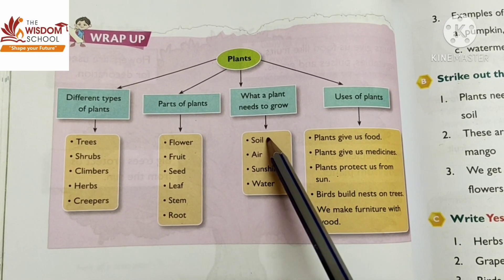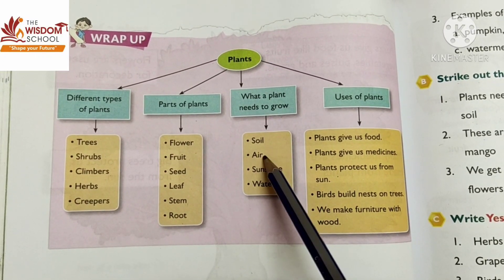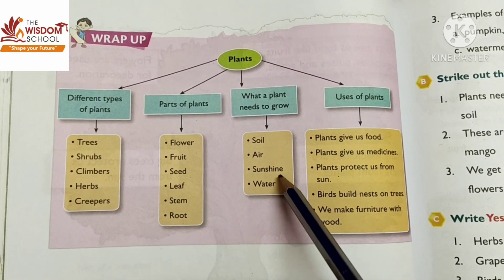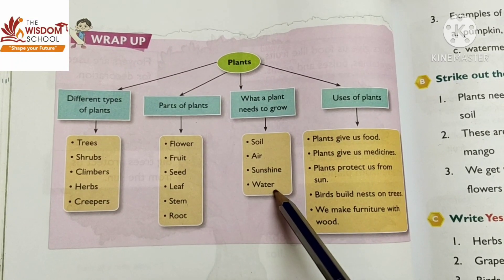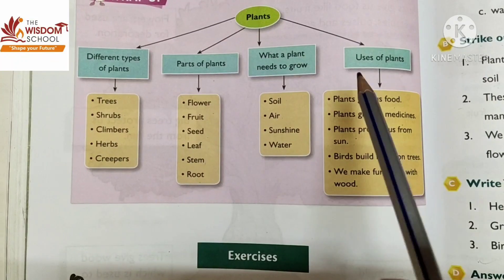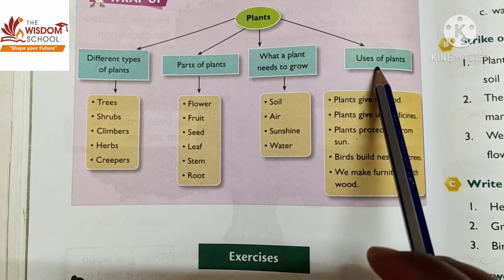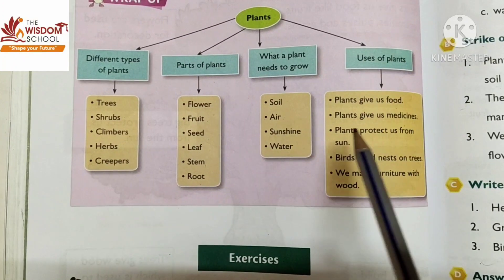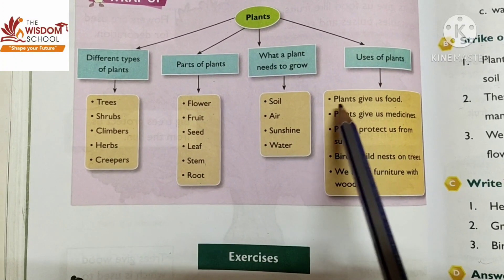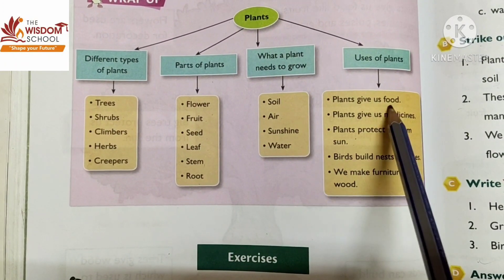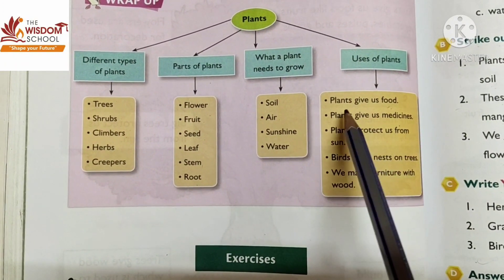The requirements for growth are soil, air, sunshine, and water. We have also read about uses of plants. Plants give us food — plants hume food deti hai.